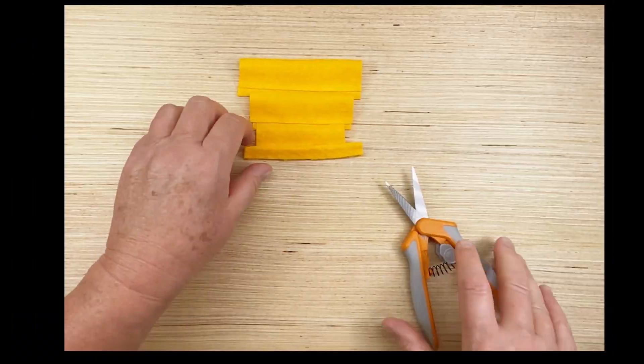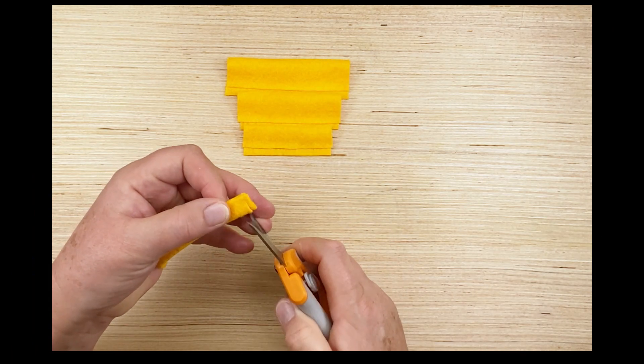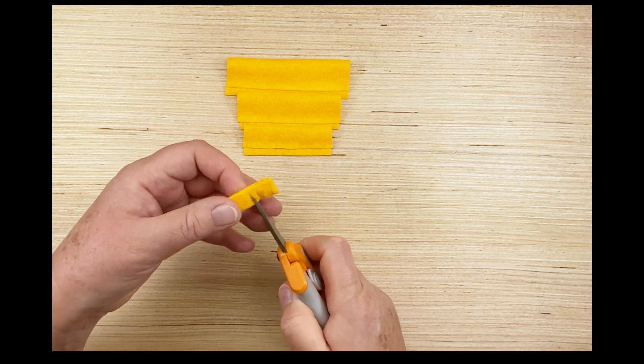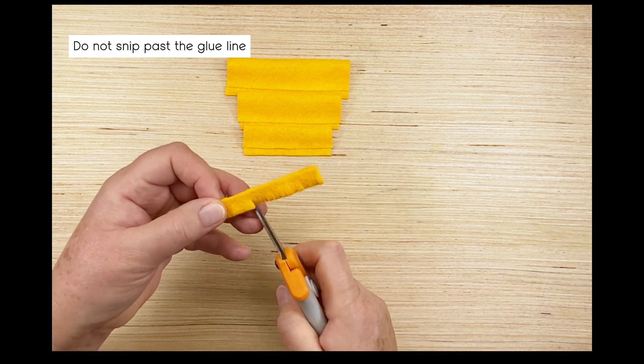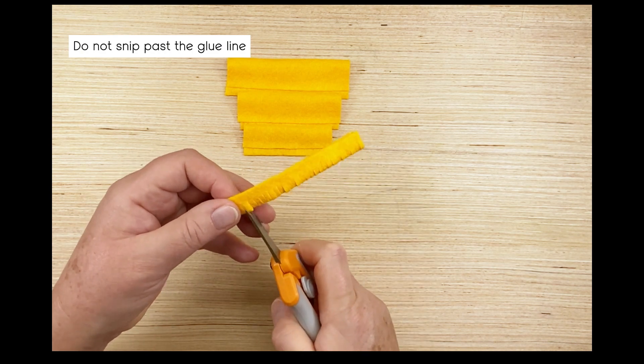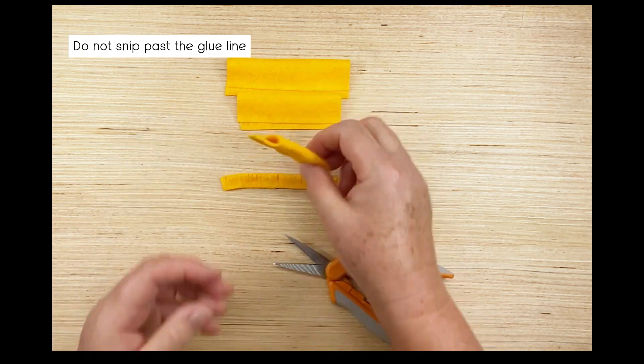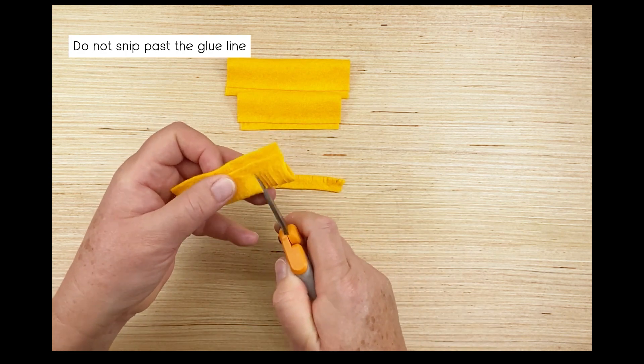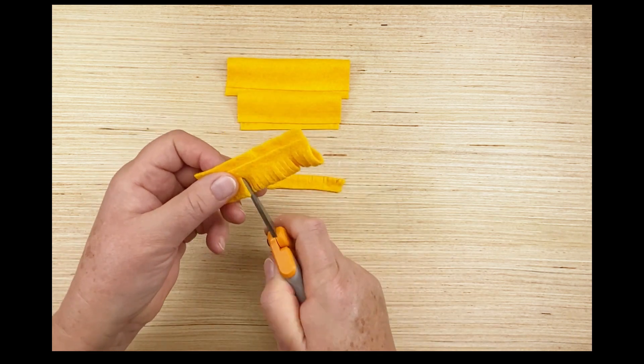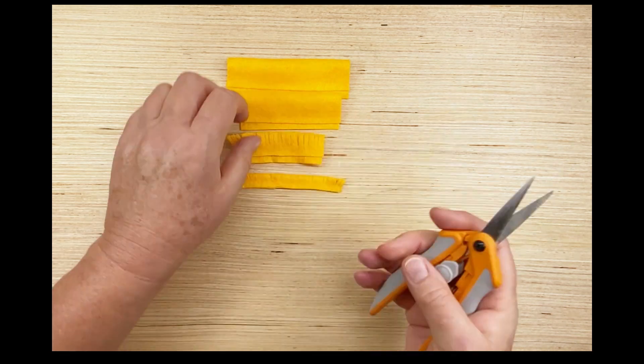We're going to snip along the folded side of the felt taking care not to go past the glue line. It doesn't have to be perfect. If you find that you've got a thicker piece of snipping going on then just go back and snip it again. Nature isn't perfect and I'm certainly not.